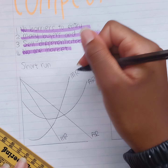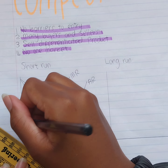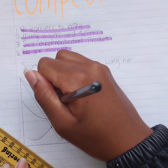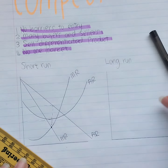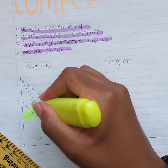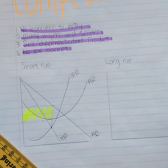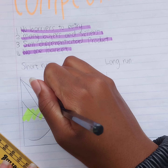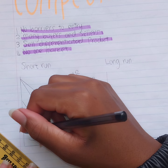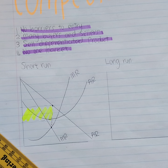You find where MR equals MC, go up to the demand curve — that whole segment is your economic profit initially. And just like a single-price monopoly, monopolistic competitors are also inefficient, because there will be a deadweight loss, producer surplus, and consumer surplus in that area.